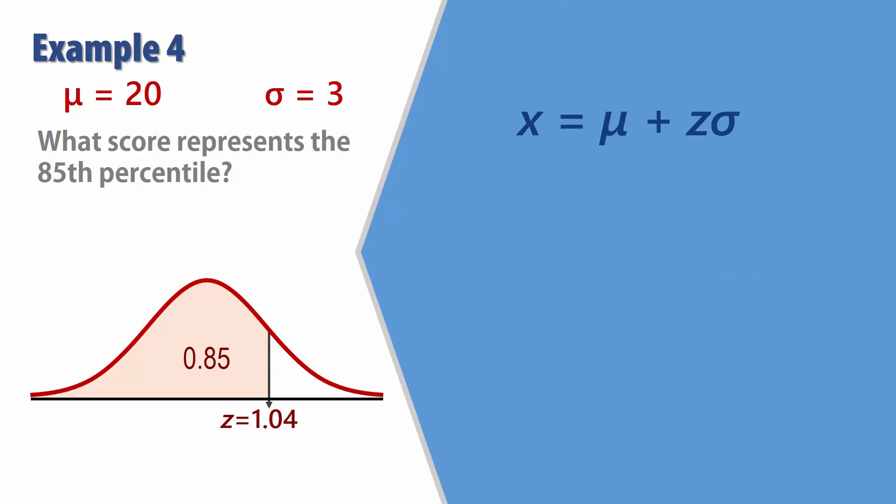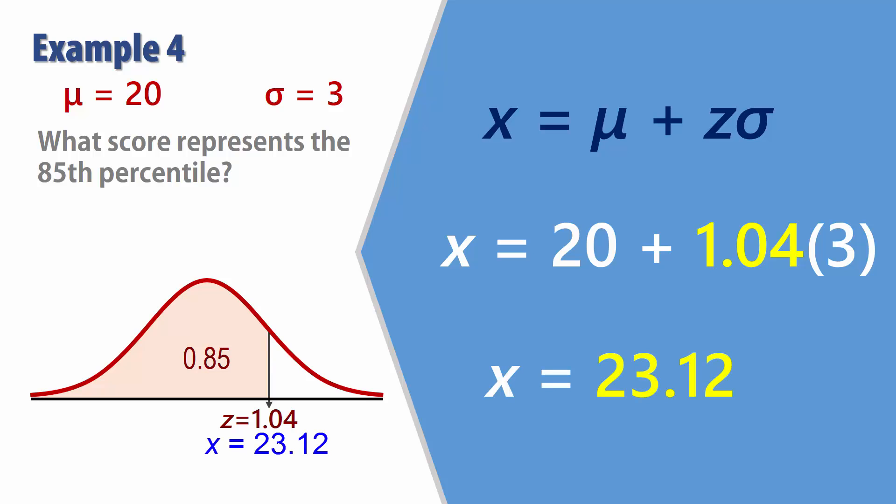Or we can directly apply the X formula we obtained earlier. And substituting the values gives 23.12. So the 85th percentile is 23.12.